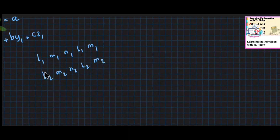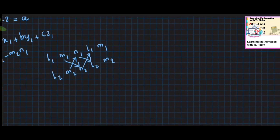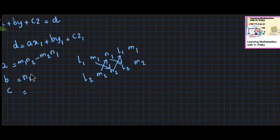We will compute the cross product. The first component is M1·N2 minus M2·N1. The second component is N1·L2 minus N2·L1. The third component is L1·M2 minus L2·M1.